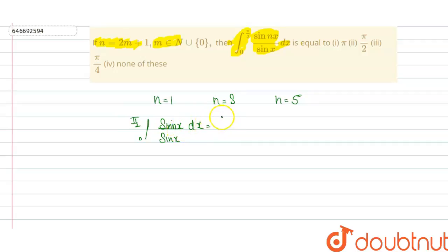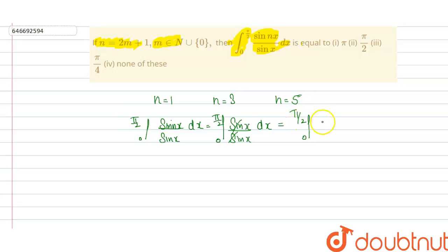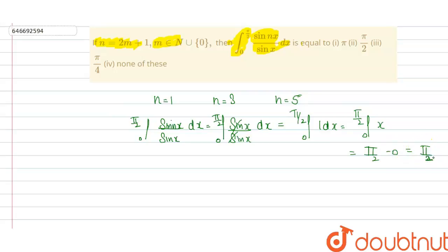Putting n equal to 1, we get the integral from 0 to π/2 of sin(x)/sin(x) dx. The sin(x) terms cancel each other, and we get the integral from 0 to π/2 of 1 dx, which equals [x] from 0 to π/2, giving us π/2.